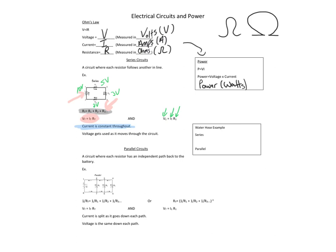For any given resistor, if you know the total current, you can multiply it by the resistance to find the voltage that it uses. So voltage gets used up as it moves through the circuit in series.